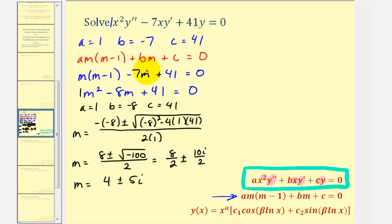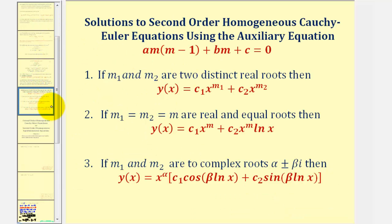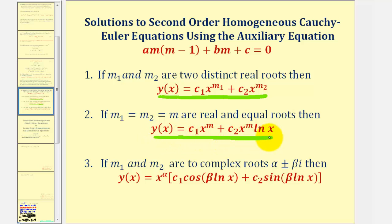Because the auxiliary equation has complex solutions, we use the complex-root form of the general solution. For a quick review: two distinct real roots give one form, two real equal roots give another form, and complex roots — as in our case — give the third form of the general solution.